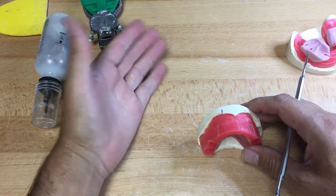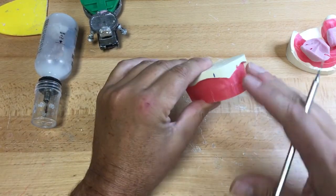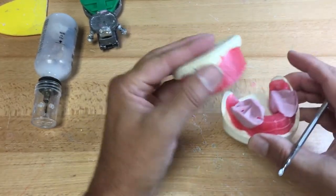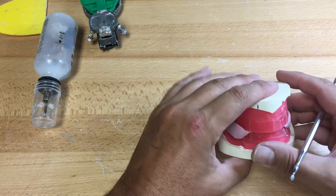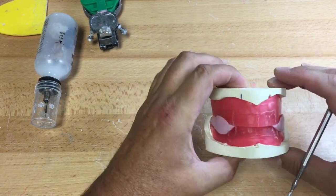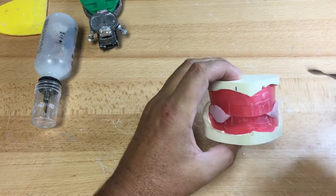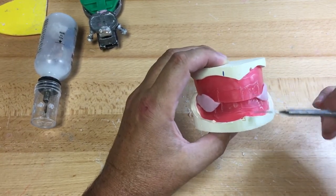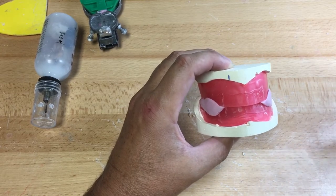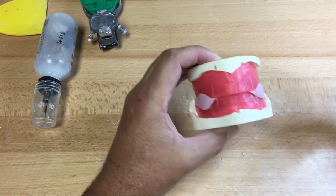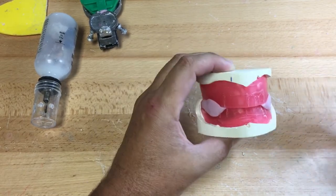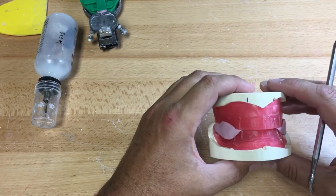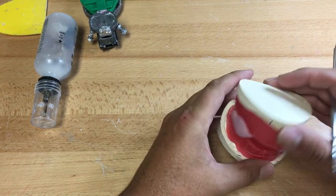If we can't handle the wax in an occlusion rim, we're going to have a very difficult time handling the wax in a denture setup. So like I said, I trim the bases. Once I get them back, if they're not equal, doesn't have to be perfect, but very close. Base, plane of occlusion, base.